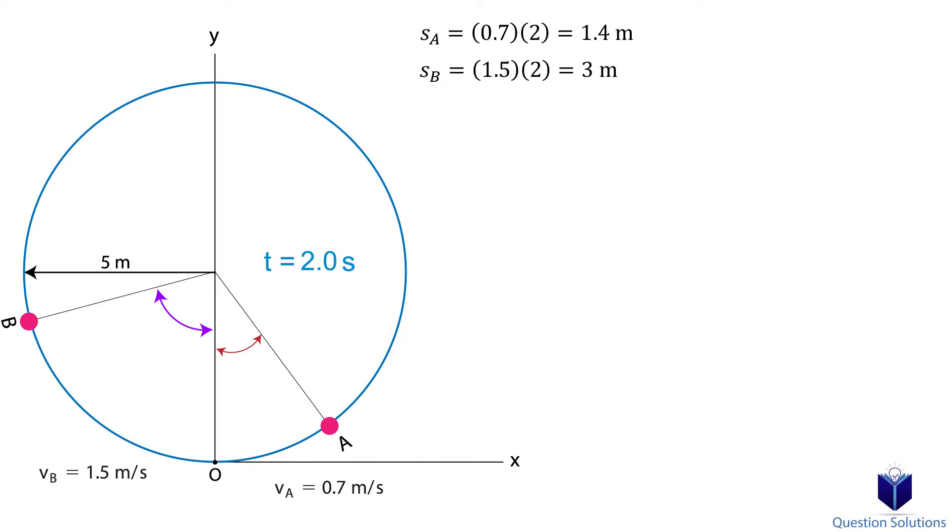We could find the value in radians and then convert it to degrees, but another way is to think about the circumference of the circle. The circumference is 2πr, or 2π multiplied by 5 meters. So the circumference is 31.42 meters.